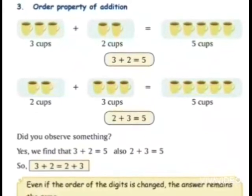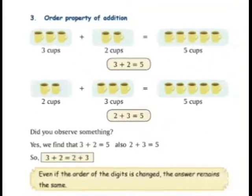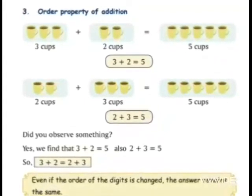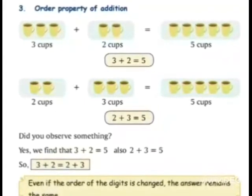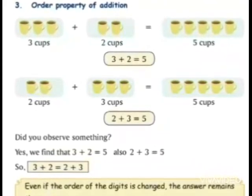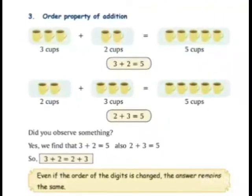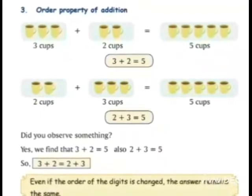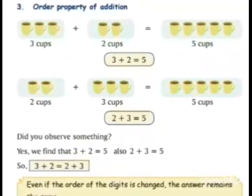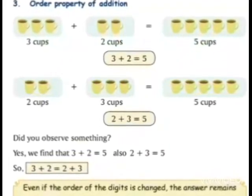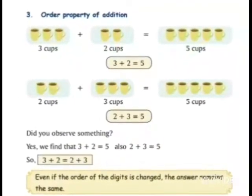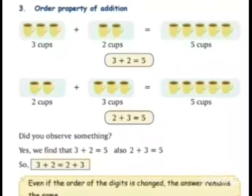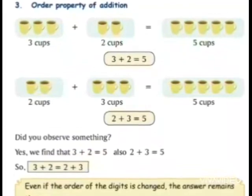So, 3 plus 2 is equal to 2 plus 3. It means कि हम 3 plus 2 करें या 2 plus 3 करें, हमारा answer same आएगा. Even if the order of the digits is changed, the answer remains the same. अगर हम लोग digit के order change कर रहे हैं तो हमारा answer same ही रहेगा।